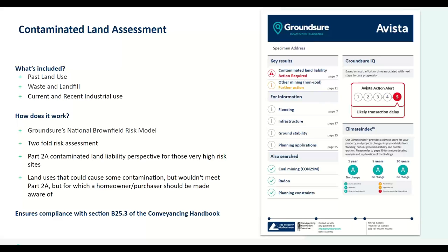This second category is particularly relevant if a client wants to apply for planning, build on top of, or add to the property, because they will be responsible for cleaning up the contamination as part of their planning permission if it was found to be contaminated and the original polluter could not be found. That is how we've adapted to people's real-world needs over time, certainly in the last 10-15 years, as more information and data has come on and more nuance is required. From a compliance perspective, this makes sure we are compliant with section B 25.3 of the Conveyancing Handbook and the Law Society Practice Note.